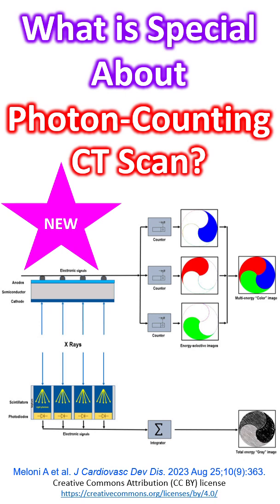The United States Food and Drug Administration cleared the first photon counting detector CT scanner in September 2021. Elimination of septa between detector elements significantly improves spatial resolution.